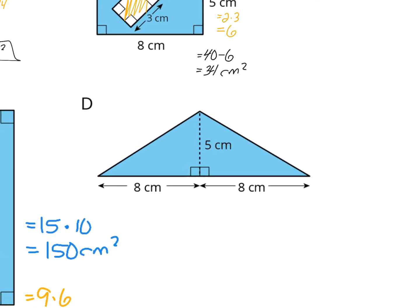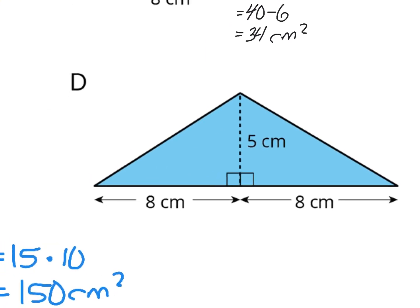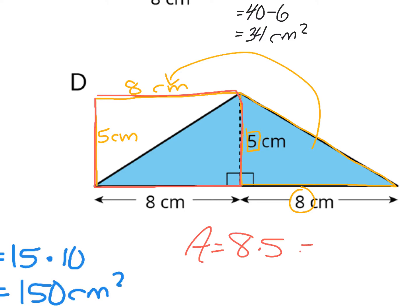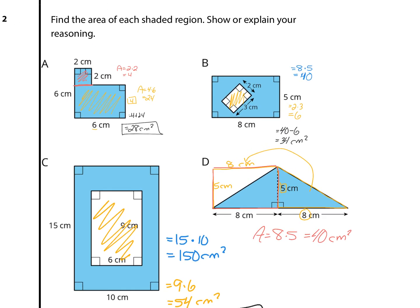Moving on to D, if I look at the right portion of this triangle, I can shift it over to the other side because this 8-centimeter side matches that 8-centimeter side, and this 5 centimeters matches that 5 centimeters. Now I have a rectangle that's 8 by 5. The area is 8 times 5, which gives a solution of 40 square centimeters. And that's it for question 2.